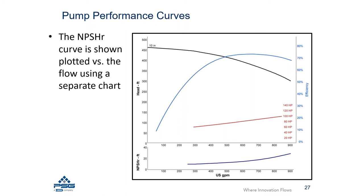Finally, there is another characteristic called NPSH required. The industry is starting to convert this term to NPSH3 — they mean the same thing for centrifugal pumps — though historically the nomenclature has been NPSHr. We have another webinar covering NPSH requirements in much more detail, but this is a characteristic of the pump that should be presented on a pump performance curve.